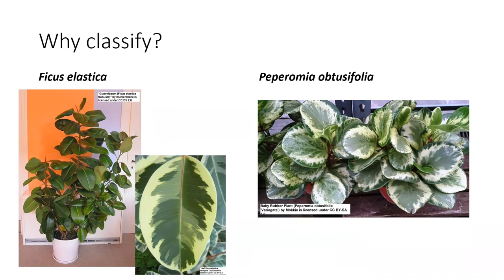Or one common name can apply to different species. For example, we have Ficus elastica, often referred to as a rubber plant. A peperomia on the right is also sometimes called a baby rubber plant. Though they may look somewhat similar with their fleshy leaves, they're in completely different plant families — the ficus is in the mulberry family and the peperomia is in the pepper family. Being in different families, they have different flowering and fruiting structures, so not all visual characteristics are going to be our classifiers.